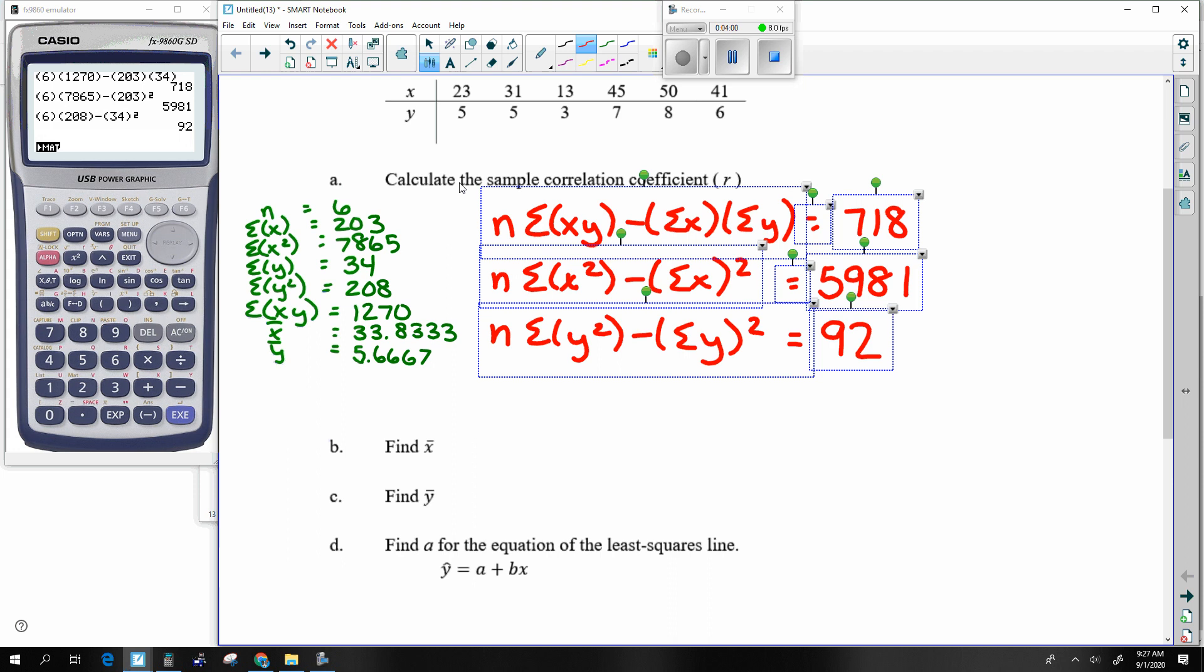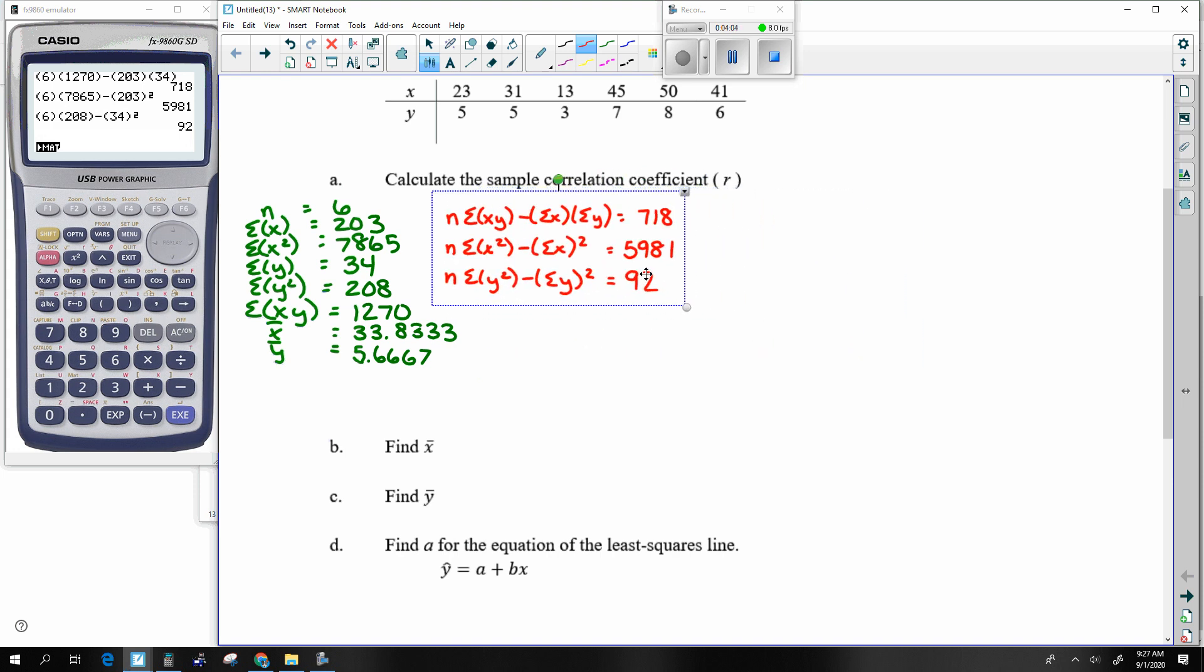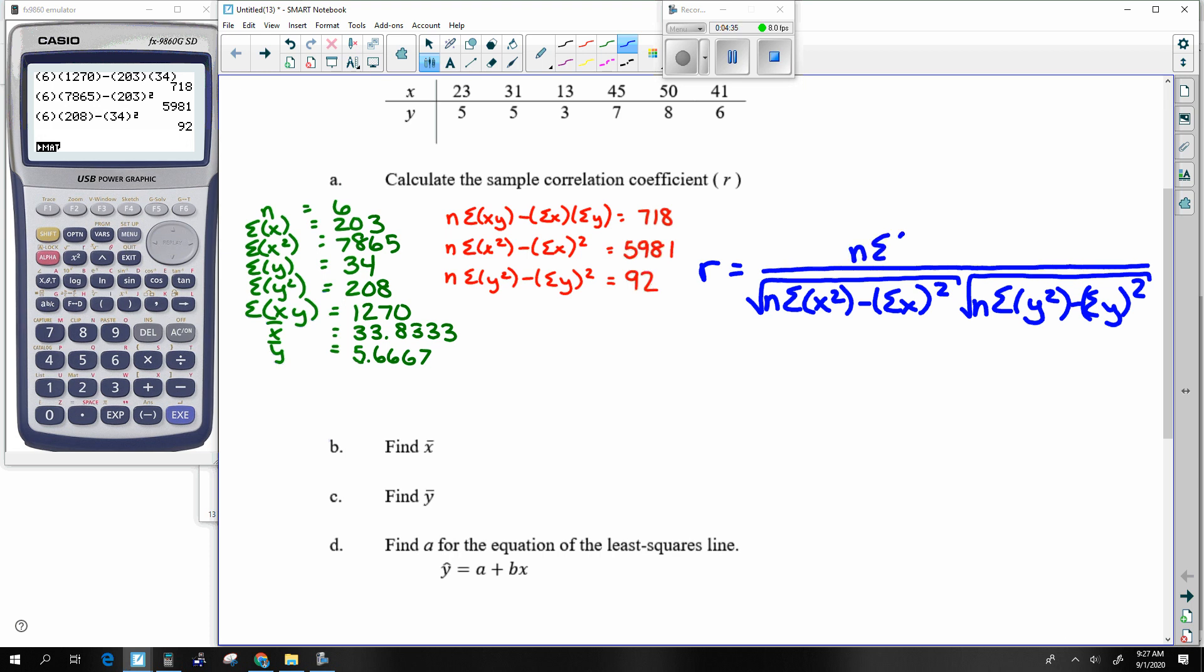So we're getting closer and closer. And then we go to the big formula itself. So r, to begin with the denominator, so that's n sum x squared minus sum x squared and n sum y squared minus sum y squared. So in essence, I'm going to get these and I'm going to multiply them together and then square root. And then this top is n sum xy minus sum x sum y. So putting the numbers in place, in this case what this is going to be is 5981.